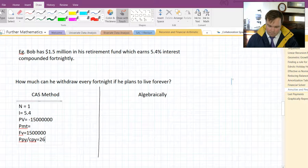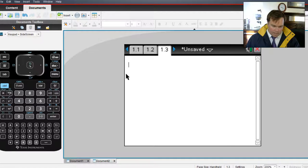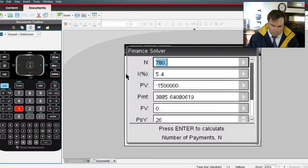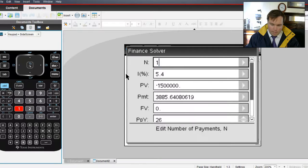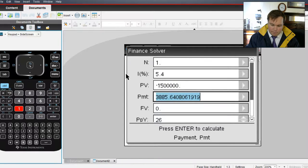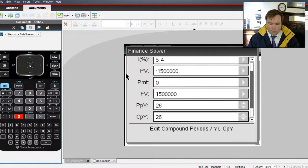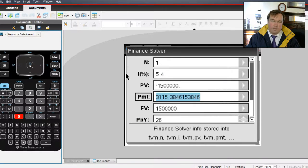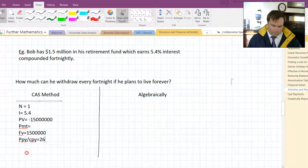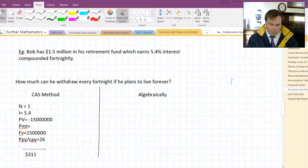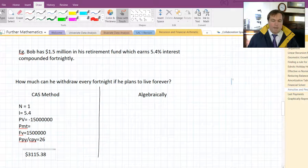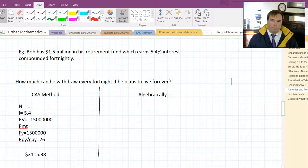So let's try this on the CAS. Menu A1. We'll have 1 here, 5.4, negative $1.5 million, 0 for payment. We still want $1.5 million at the end. And compounds per year is 26. So we go down to payment and hit enter. $3,115.38. That's the amount he can withdraw every fortnight, and the $1.5 million doesn't change.